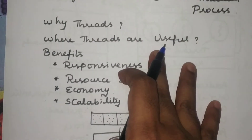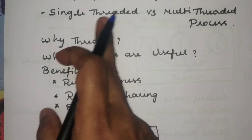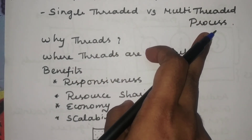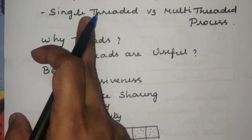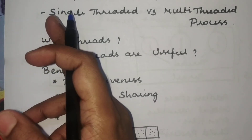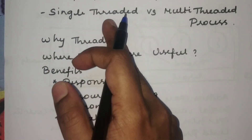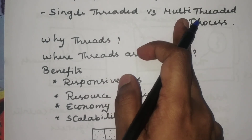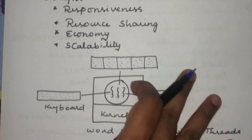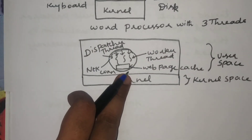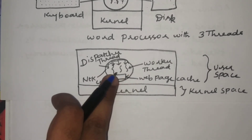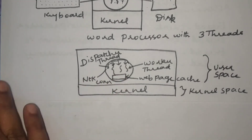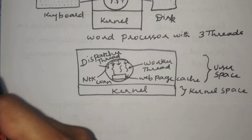This is what the multi-threading environment gives us — more benefit compared to single-threaded processes. With single threading, it takes more time to perform all those operations and when the user interacts faster than the process can respond, it is not efficient. That is why we go with multi-threading. The next example is the web server. A web server keeps on receiving requests from clients, and there are many clients giving requests that the server has to respond to.